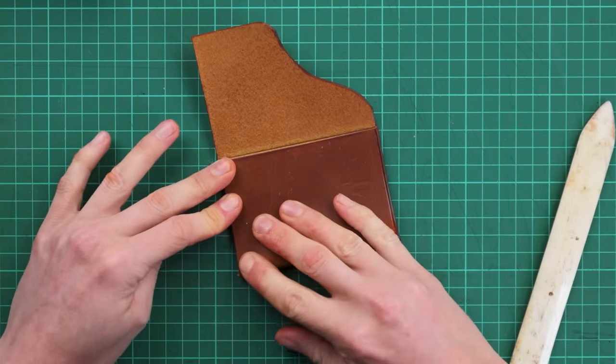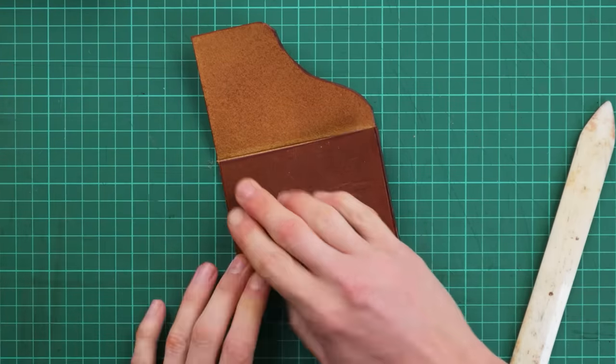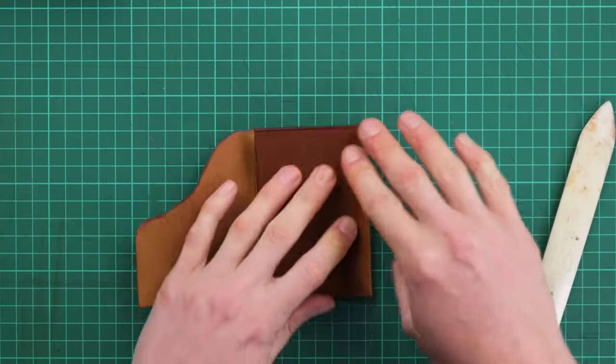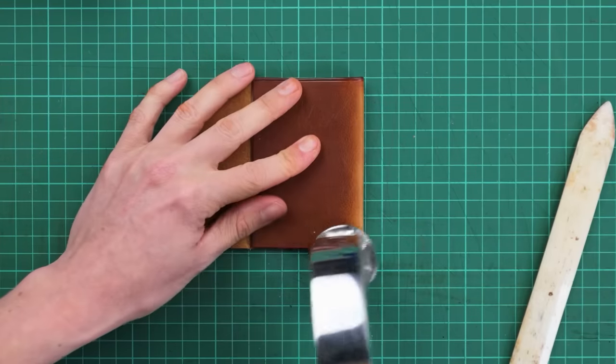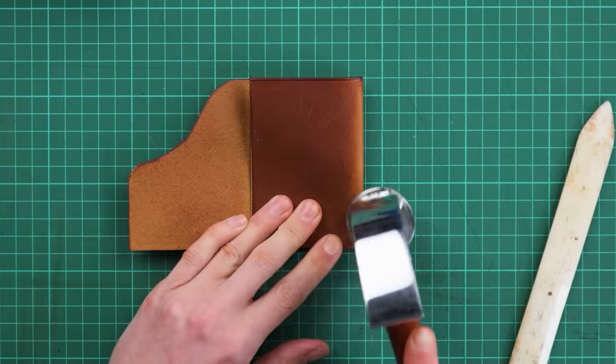And then we're going to fold in that inside section into the center and get that nice and glued down. And then we can use a hammer and again just tap along the edges just to get that folded in nicely.